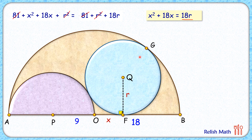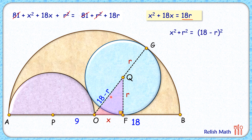When two circles — blue and brown — are touching each other, their centers and point of contact lie in a straight line. So O, Q, and G all lie in a straight line. QG is the radius of the blue circle R, and OG is 18 cm, so OQ = 18 − R. Applying Pythagoras to the right angle triangle: X² + R² = (18 − R)². Expanding the right side and simplifying, R² cancels on both sides, giving us X² = 324 − 36R.